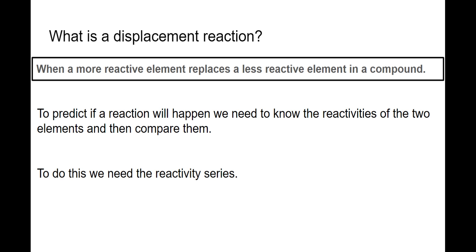To predict if a displacement reaction will happen, we need to know the reactivity of the two elements involved — in this case metals, so we're just talking about metals in this module — of the two metals involved. To be able to do that, we need our reactivity series.